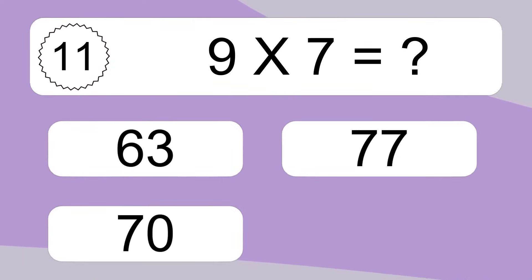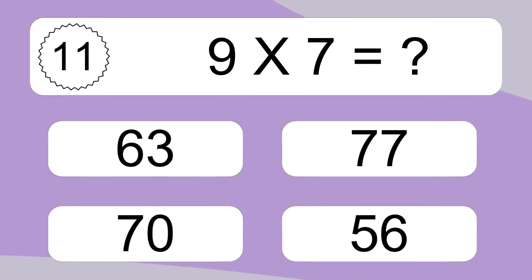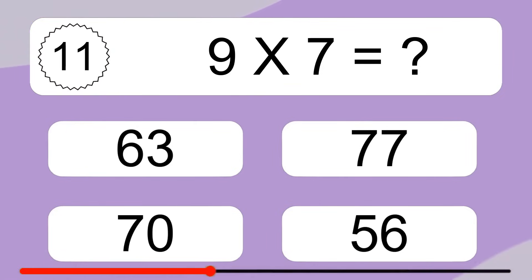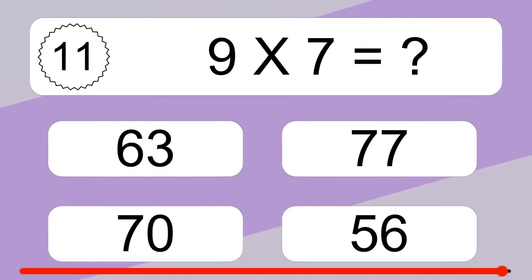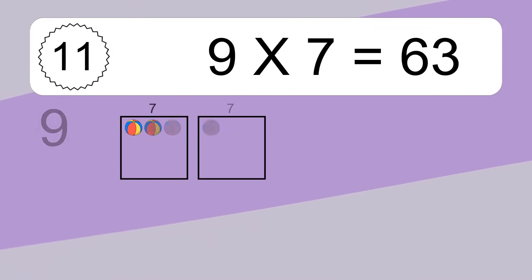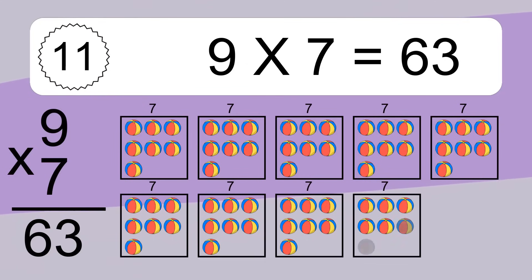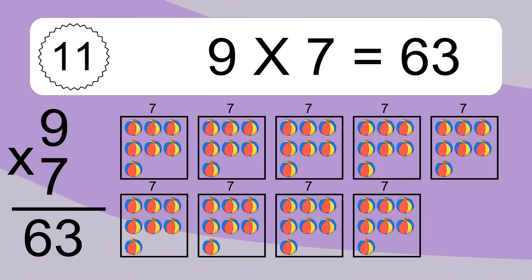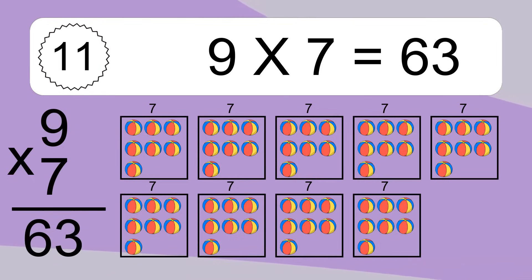9 times 7 equals what? 9 times 7 equals 63. We have 9 boxes and each box has 7 colorful balls inside. If you count all the balls in all the boxes together, you will have 9 times 7 balls. This equals 63 balls.